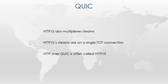You may be thinking: doesn't HTTP version 2 already do this? It does use multiple streams, yes. But it contains these within a single TCP connection. That means one stream will still be able to affect the quality of another. If TCP needs to resend missing packets, all streams need to wait for this to complete. Because of this similarity, mapping HTTP over QUIC is often called HTTP version 3.